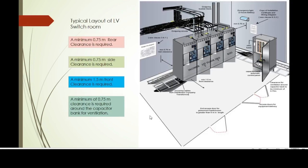Here we have a typical layout of an LV switch room as per ADDC wiring regulations 2020. We need a minimum 0.75 meter rear clearance and 1.5 meter front clearance. Sidewise, we need a minimum 0.75 meter clearance for the LV switchgear, and around the capacitor bank we need 0.75 meter clearance for ventilation.